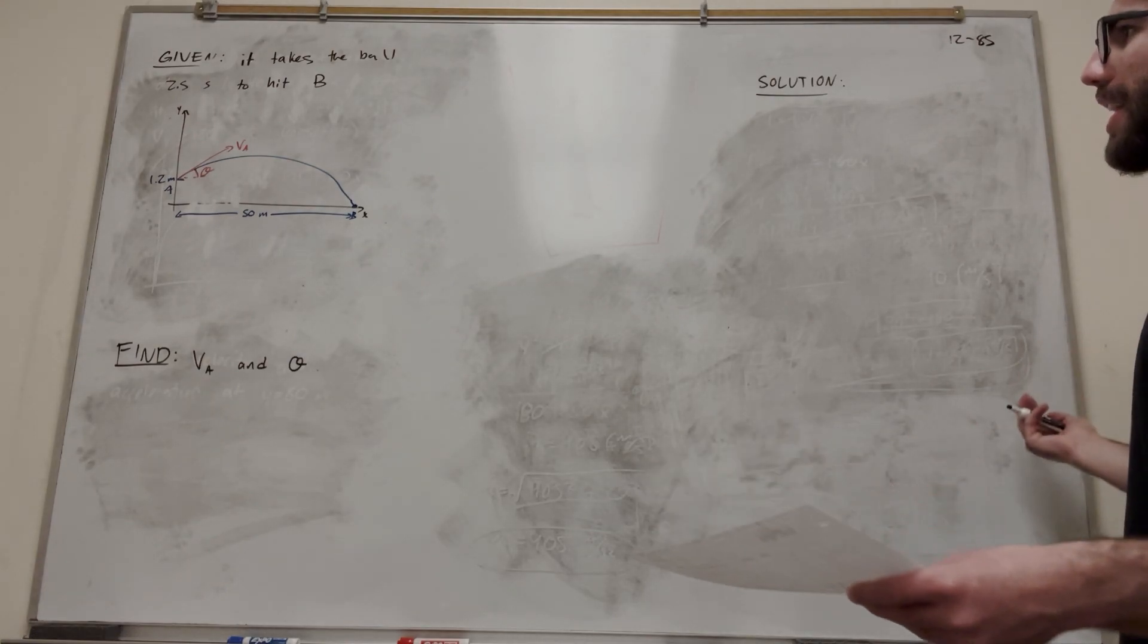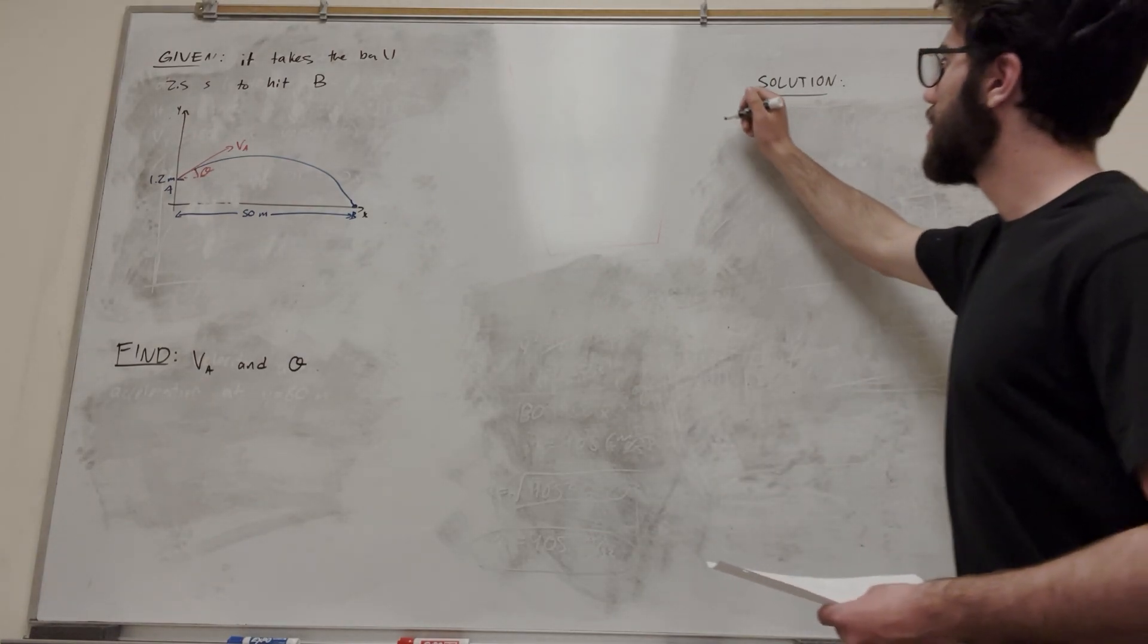So when you have this two-dimensional kinematics problem, it's good to break it up into horizontal and vertical. So let's start with horizontal.